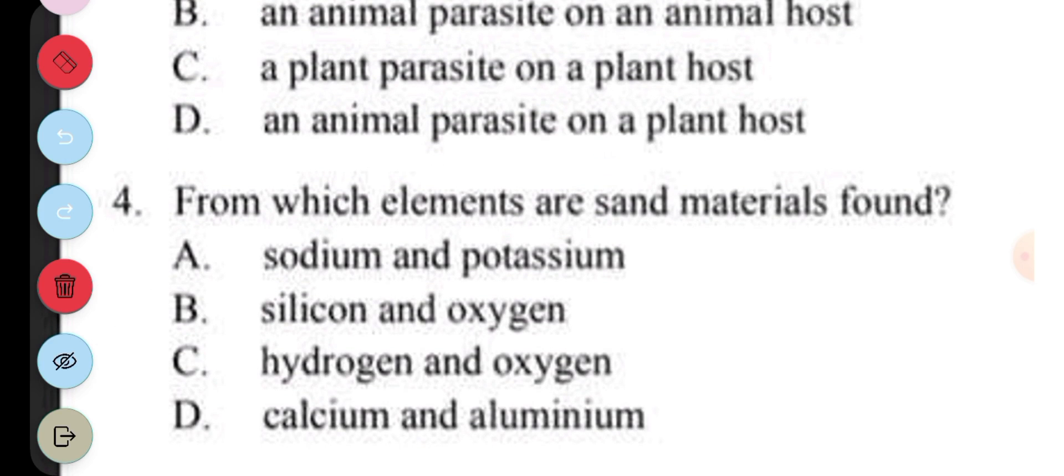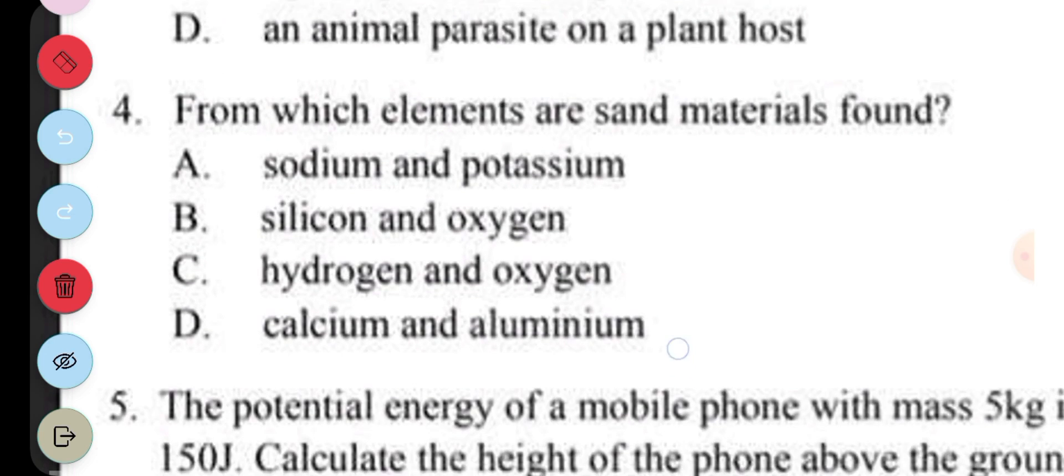Question 4. From which elements are sand materials formed? A. Sodium and potassium. B. Silicon and oxygen. C. Hydrogen and oxygen. D. Calcium and aluminum. The answer to question 4 is B, silicon and oxygen. Most sand materials contain silicate.